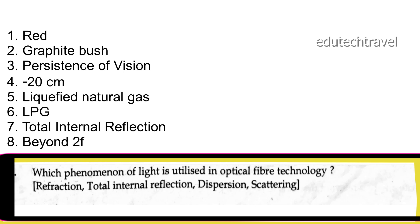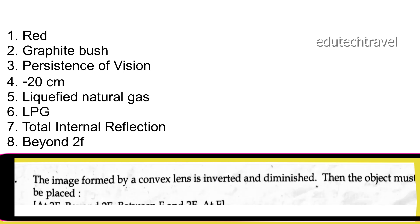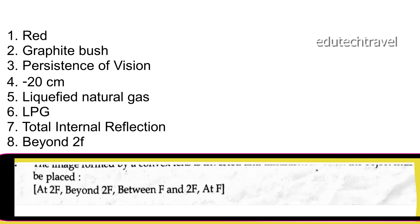Next question: the image formed by a convex lens is inverted and diminished. The object must be placed beyond 2F. At 2F the image is the same size; between F and 2F the image is enlarged; at F the image is also enlarged.